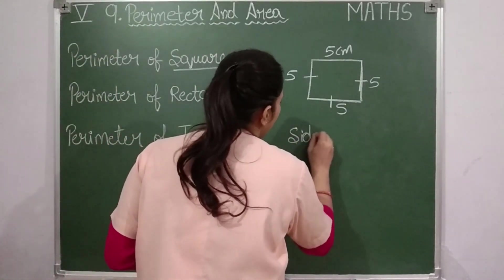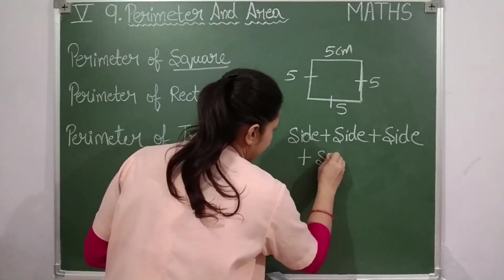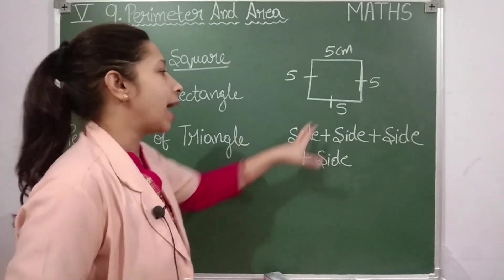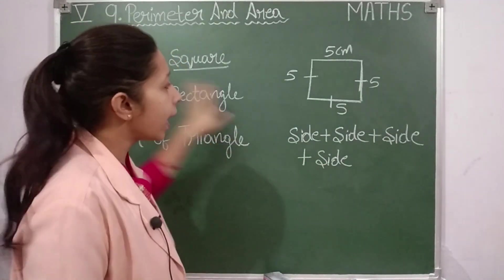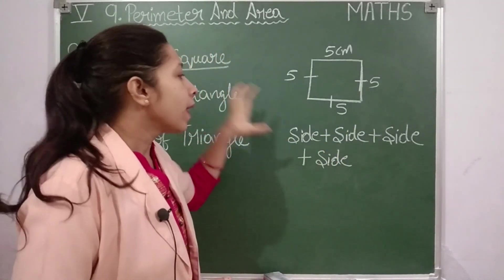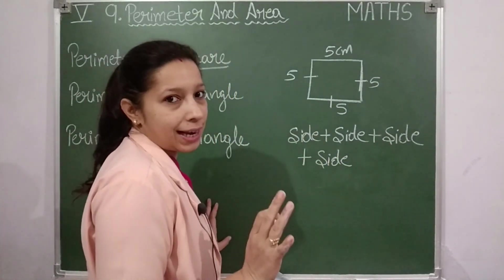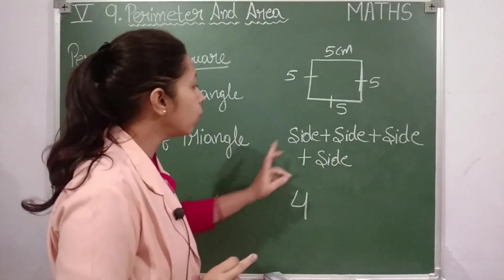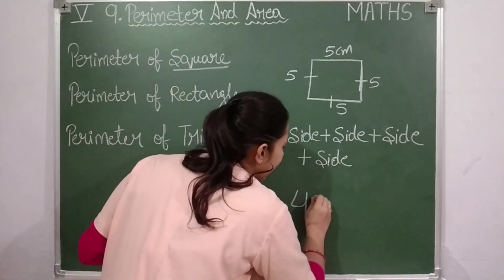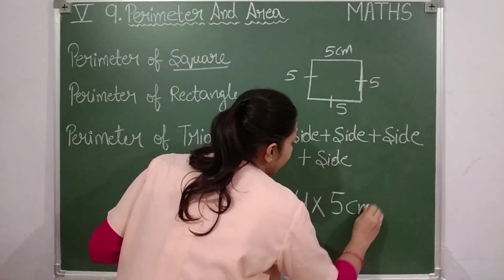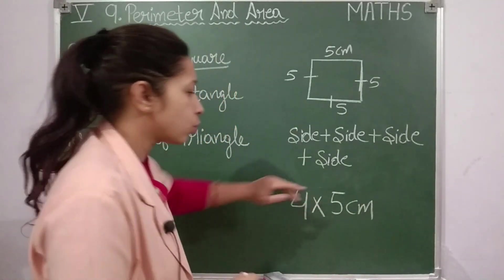Now the formula: side plus side plus side plus side. Side can be five centimeters or five hundred centimeters — what you have to do is take all four sides and add them. We can write this in short. How many times is 'side' coming? Four times. So we write four, and since all four sides are equal, we take only one side and multiply by four. One side is five centimeters, so four times five gives twenty centimeters.